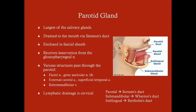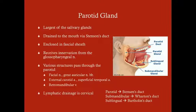I titled this lecture the parotid gland even though there are three salivary glands on each side, because the parotid gland is the largest of the salivary glands and that's where most of the neoplasms happen. The parotid gland is on both sides; it is enclosed in a fascial sheath, covers the masseter muscle deep to the vertical ramus of the mandible and up to the auditory meatus. It drains into the mouth via Stenson's duct, roughly above the second upper maxillary molar.